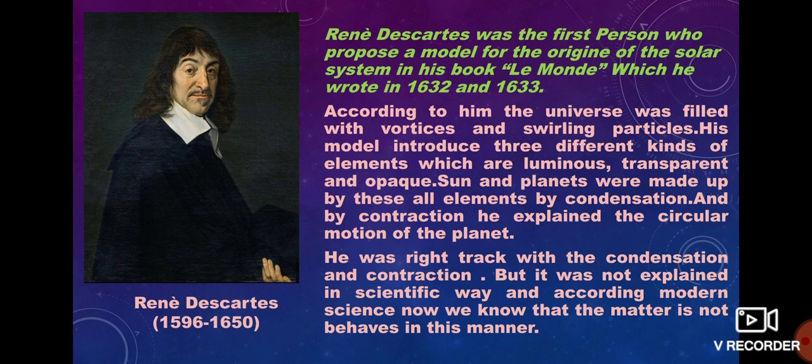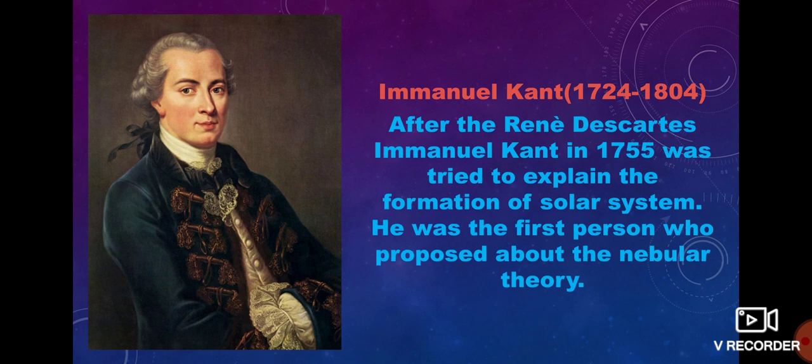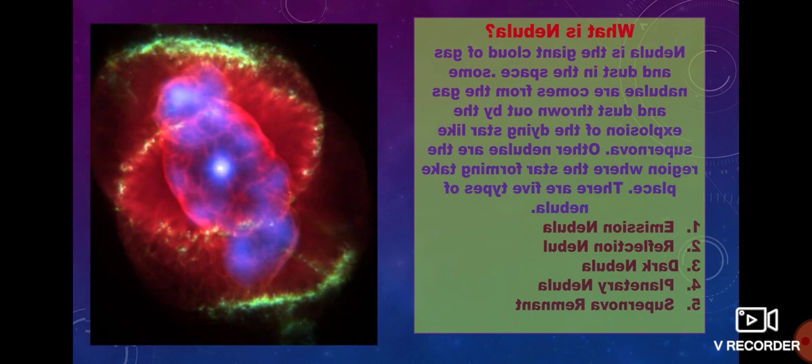He explained the circular motion of planets through condensation and contraction, but it was not explained in a scientific way. According to modern science, we now know that matter does not behave in this manner. After him, Immanuel Kant gave his theory in 1755. He was the first person to propose the nebula theory.